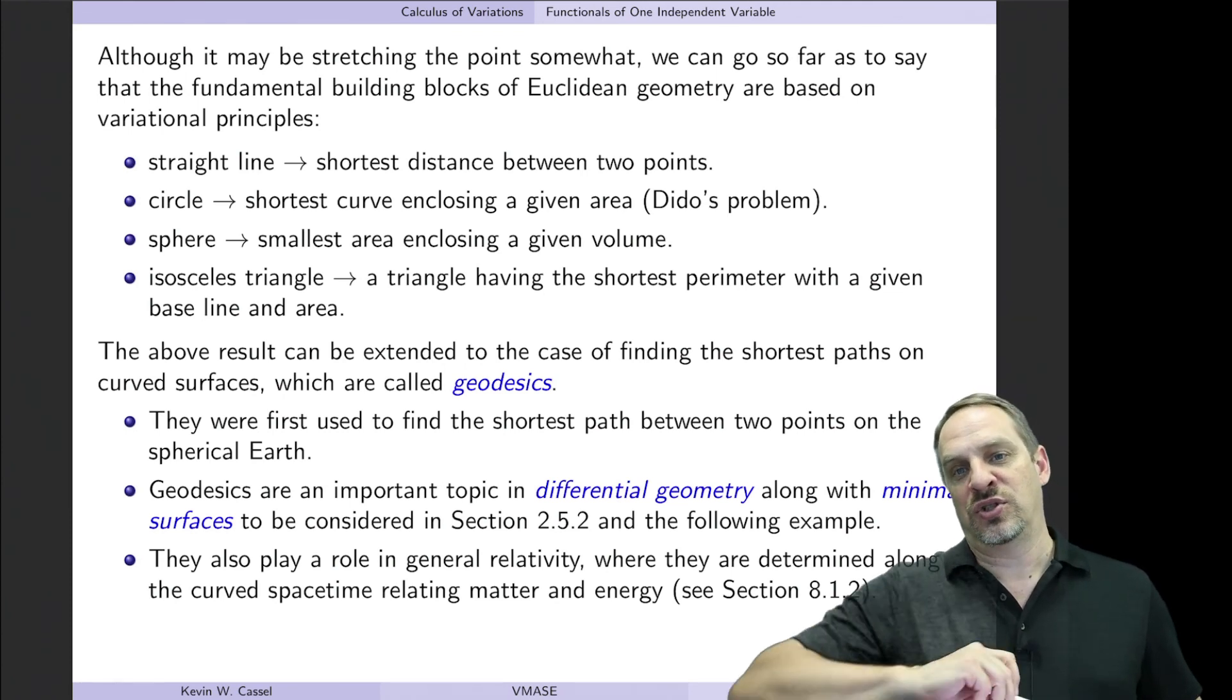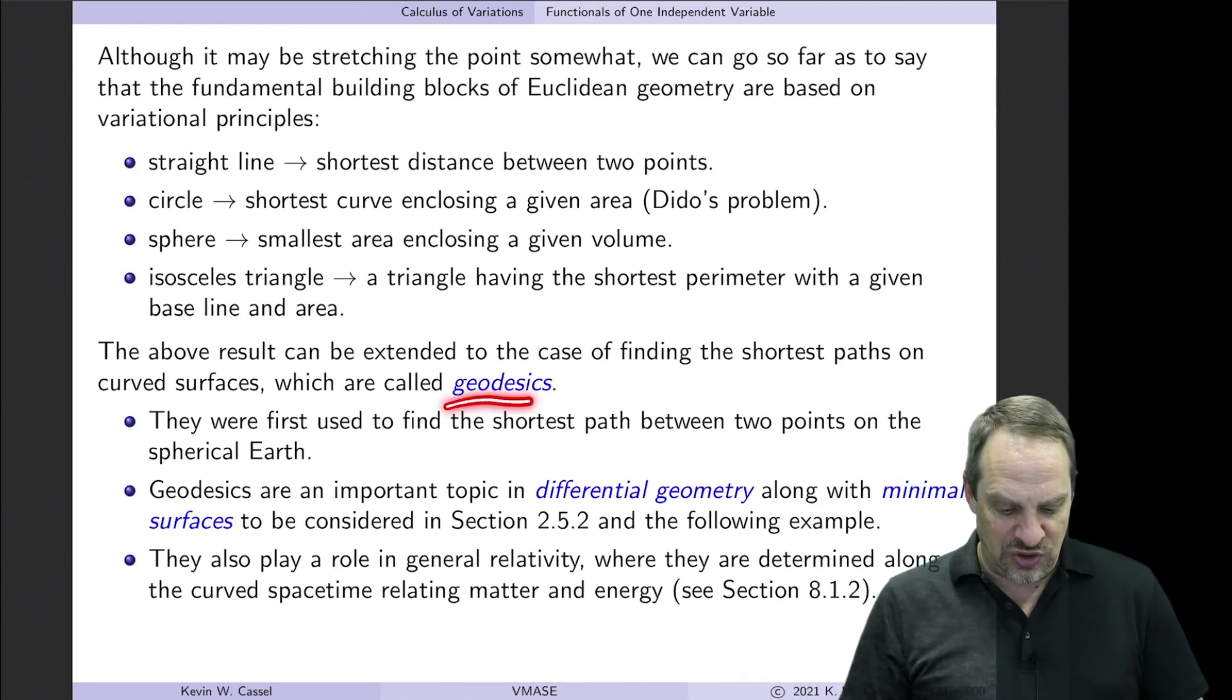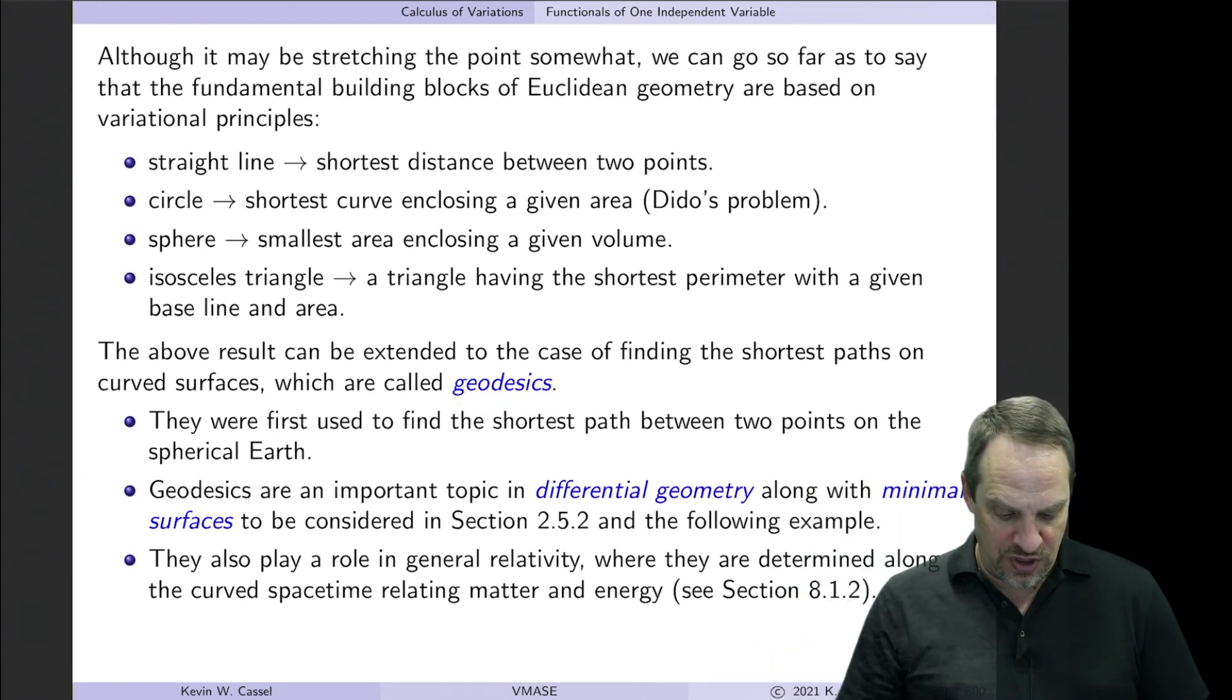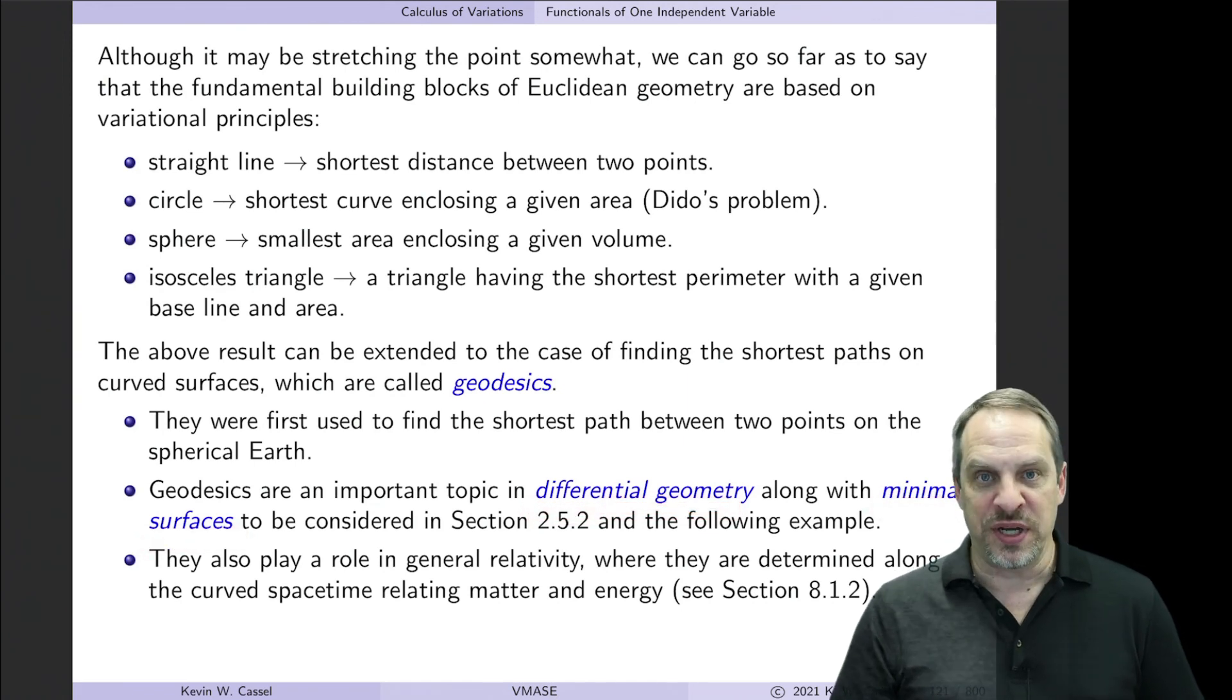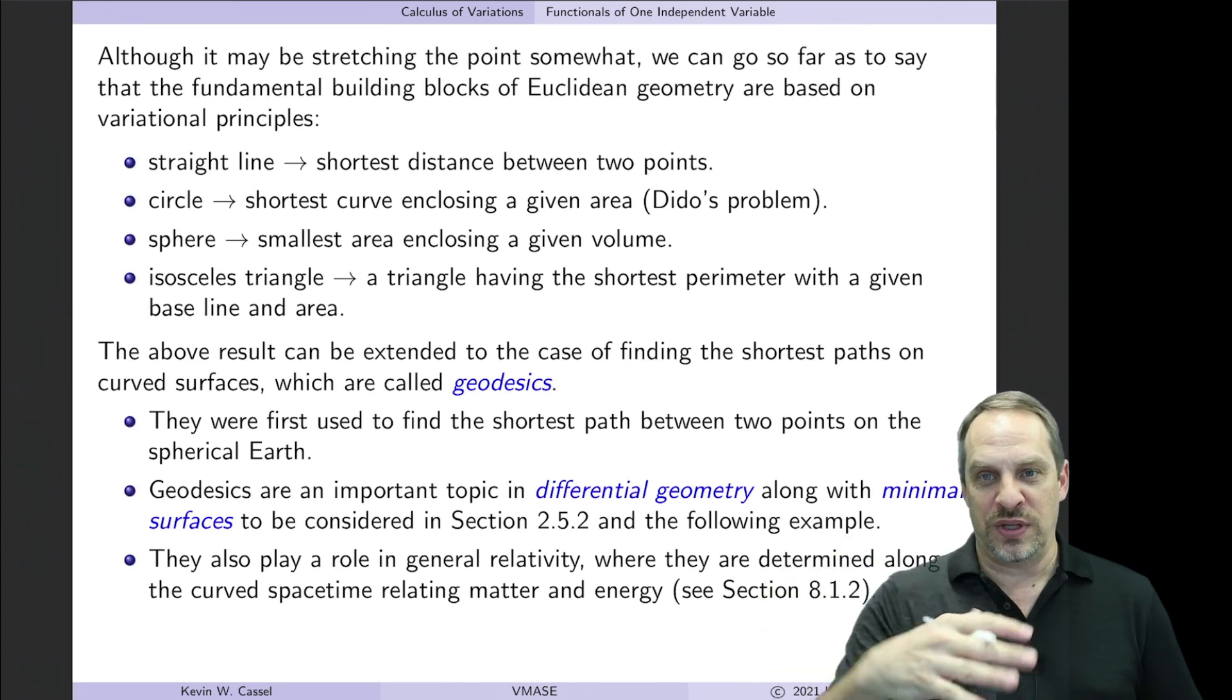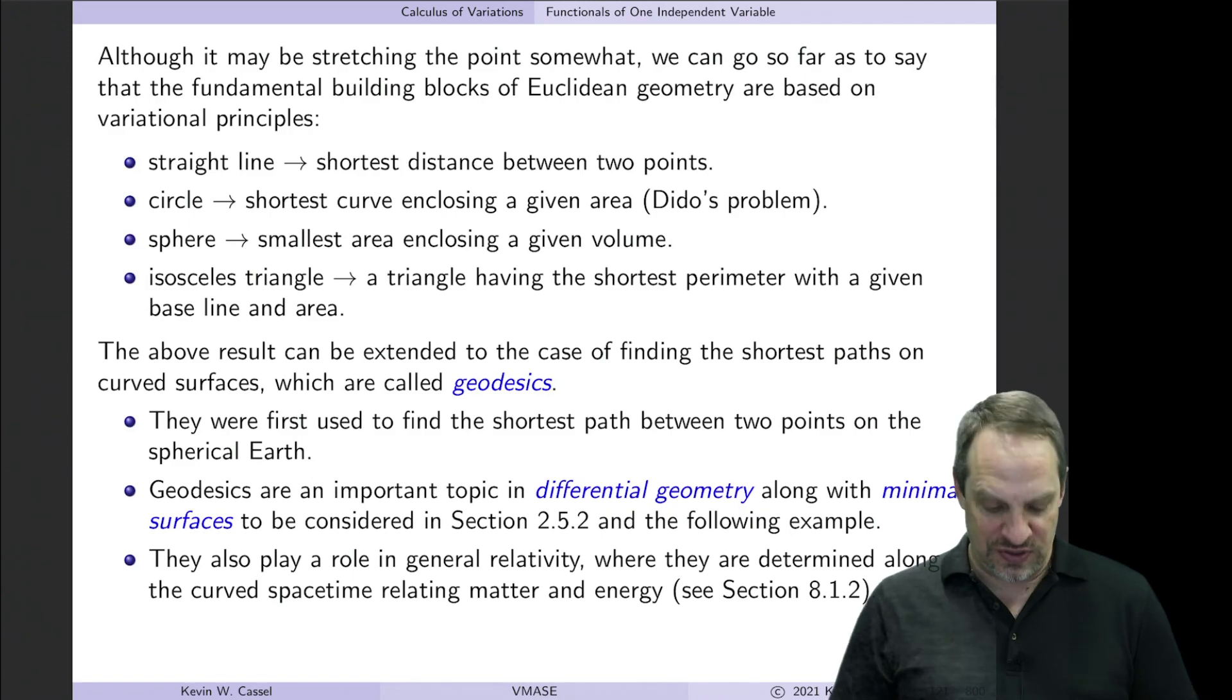Now, of course, if my lunch is thousands of miles away, then I have to take into account the curvature of the Earth, and we call those geodesics. Anytime you see the word geo, that means Earth. So a geodesic. Geodesics take into account the curvature of the Earth in order to do that. Well, more important than me finding my lunch, this is useful in differential geometry, also in minimal surfaces, which is a topic that will come up later in this chapter. It's also actually important in general relativity. So you have the space-time continuum, right? And so that's a curved surface of space and time. So how do you find minimum distances in that space? And so that's similar to a geodesic.